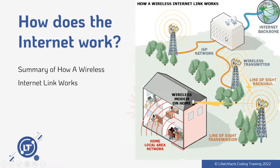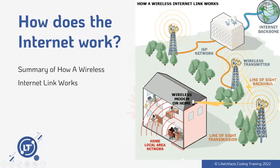Your ISP network then makes a connection to the wireless transmitter. The wireless transmitter passes information across, and can also give access to your wireless modem at home, your LAN, etc. So this is basically a summary of how everything works.